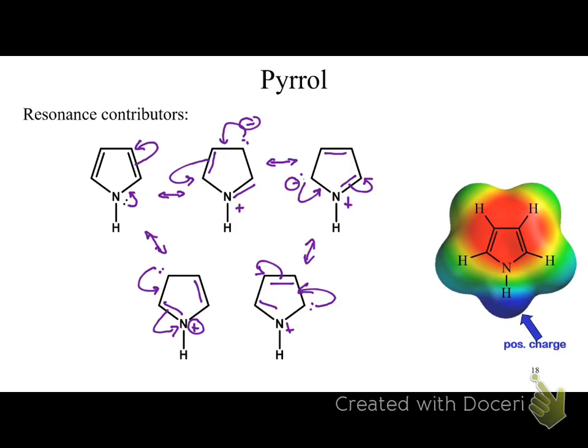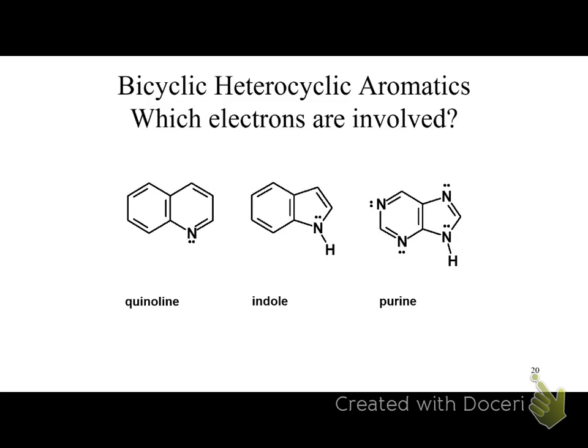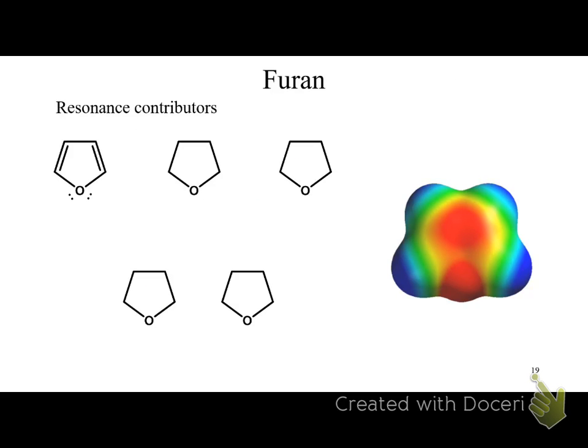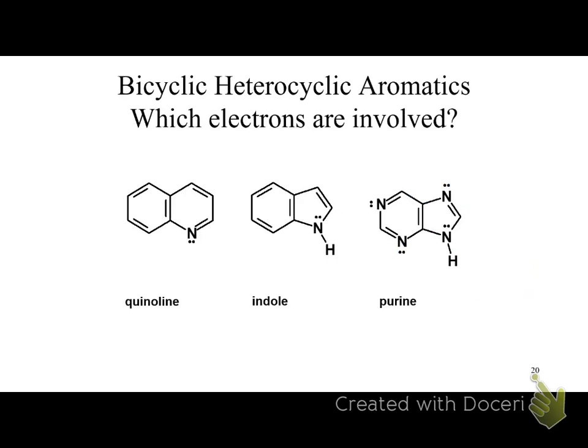Nobody likes working with pyrrole because it smells really bad — dead fish times two. It always makes you want to gag when you smell it the first time, and then the smell magically seems to go away because you become desensitized to it. But that's actually a bad sign — that's how things can be dangerous.